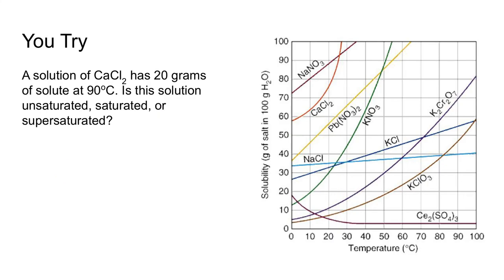You try: a solution of calcium chloride (CaCl2) has 20 grams of solute at 90 degrees Celsius. Is it saturated, unsaturated, or supersaturated? CaCl2 is the orange line. Looking at 20 grams and going up to 90 degrees Celsius, the CaCl2 line is all the way up at the top — so 20 grams at 90 degrees Celsius would be unsaturated.